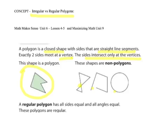This is a non-polygon because it crosses, this is a non-polygon because it's open, you can move into that shape, and this is a non-polygon because it does not have straight sides.